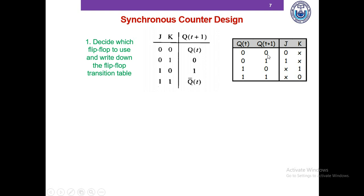In the first row of the transition table, the present state is 0 and the next state is also 0. We ask: what JK inputs can lead to this 0-to-0 transition? Looking at the characteristic table, if J=0 and K=0 we get a 0-to-0 transition, and if J=0 and K=1 it is also possible. Therefore, we write J=0 and K=X in the transition table, where X means K could be either 0 or 1.